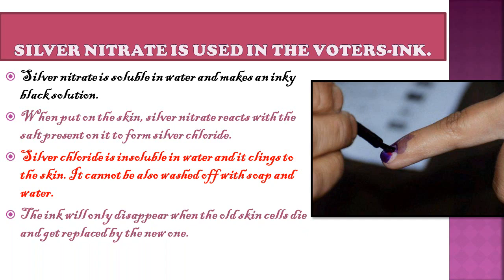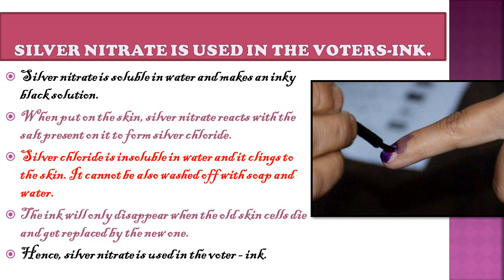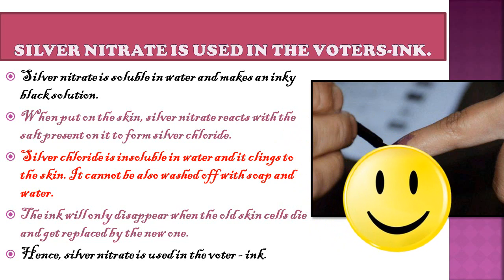The ink will only disappear when old skin cells die and get replaced by new ones. Hence silver nitrate is used in voter's ink. I hope you all have understood all the scientific reasons. That's it for today's video. Thank you.